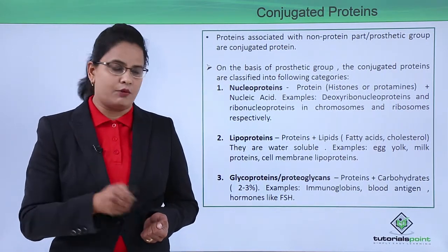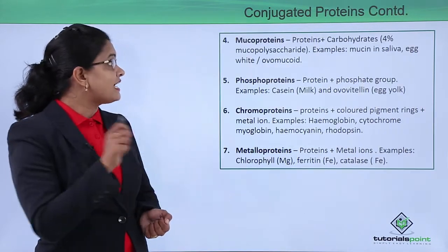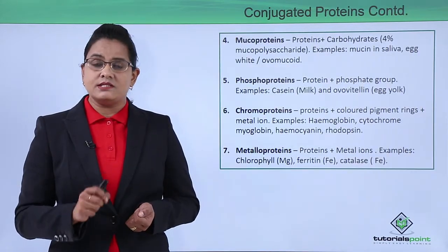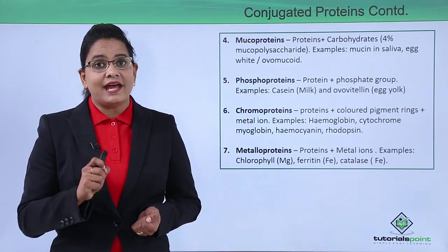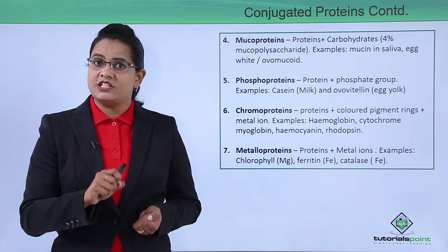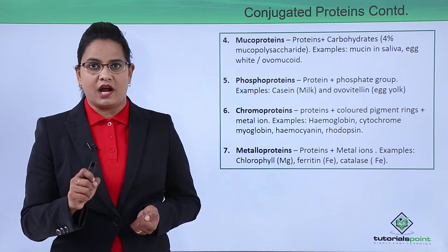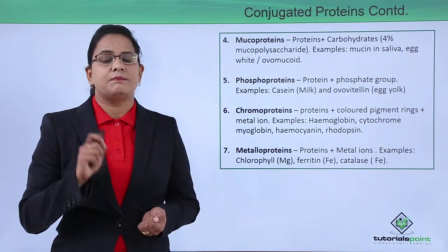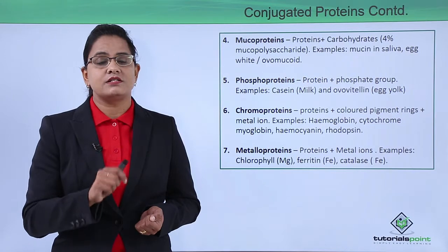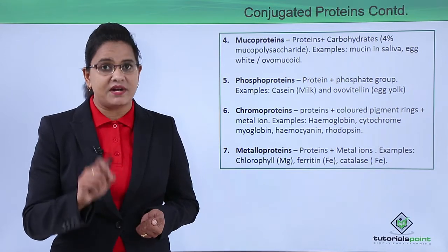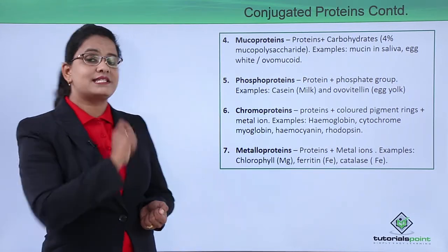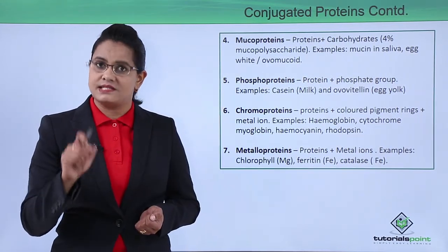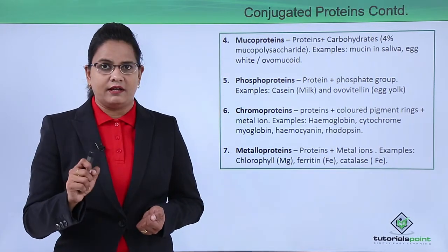The next category of conjugated proteins is mucoproteins. They are also protein plus carbohydrates, mainly mucopolysaccharides, but the percentage of carbohydrate here is around four percent. Examples include mucin present in saliva and the white of egg, which is also called ovomucoid.